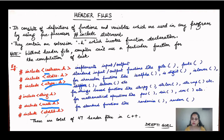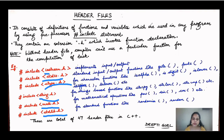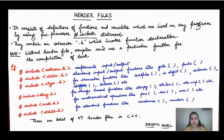One more header file is stdlib.h — the standard library. As the name suggests, it is the library of C++, and standard functions are inbuilt in this library. If we call functions like rand or randomize, it will automatically perform the desired operation. In total, there are 47 header files in C++, and we use them depending on the type of operations we are performing.